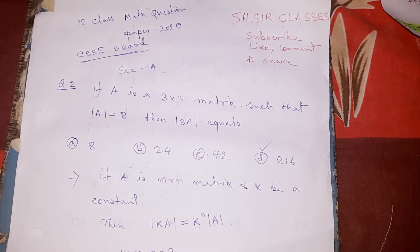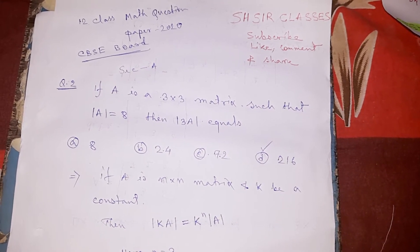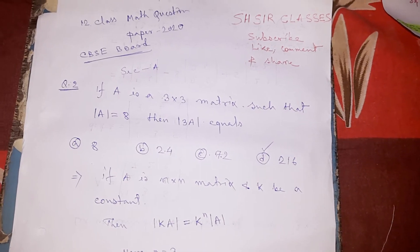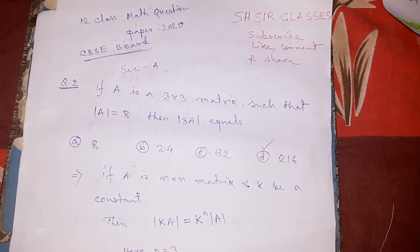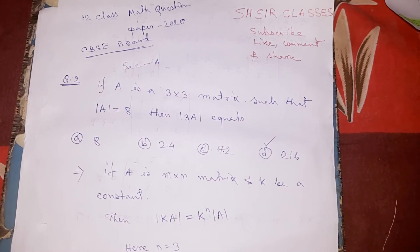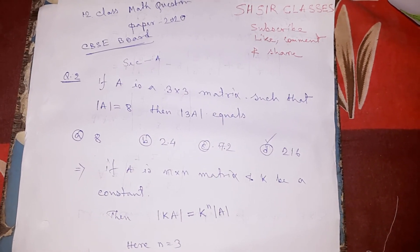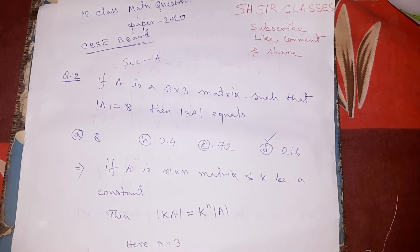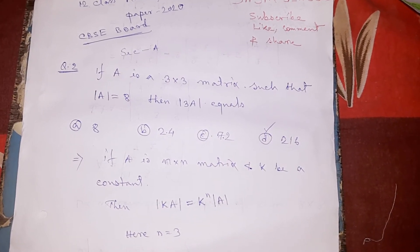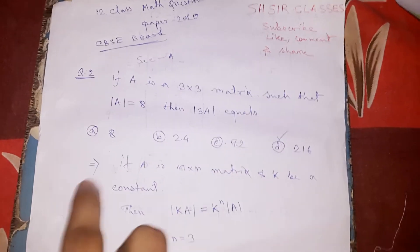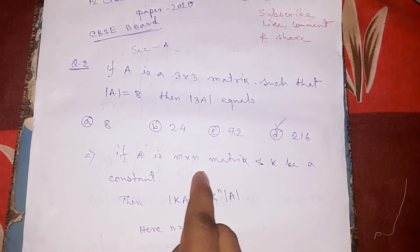If A is a 3×3 matrix such that determinant of A equals 8, then determinant of 3A equals what? The options are: 8, 24, 72, and 216. So let's do the math. If A is a 3×3 matrix and k is a constant, then...